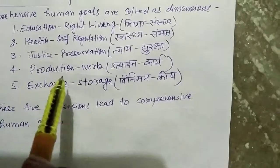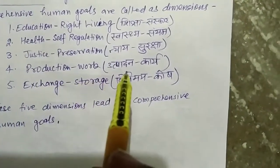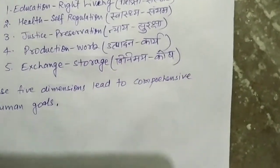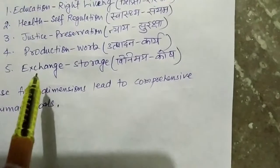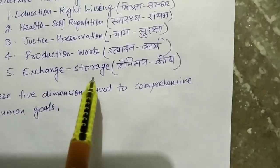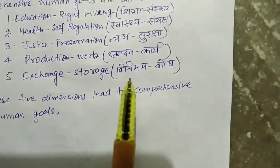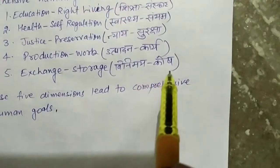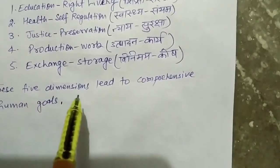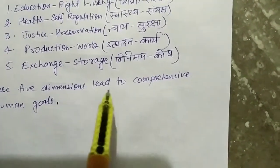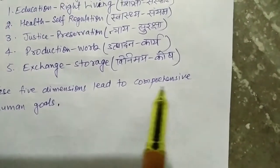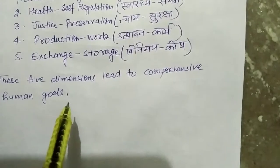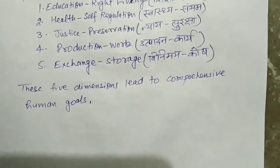Number four: production and work, that is utpadan or kary. Number five: exchange or storage, that is vini mai or koosh. These five dimensions lead to comprehensive human goals. Thank you so much.